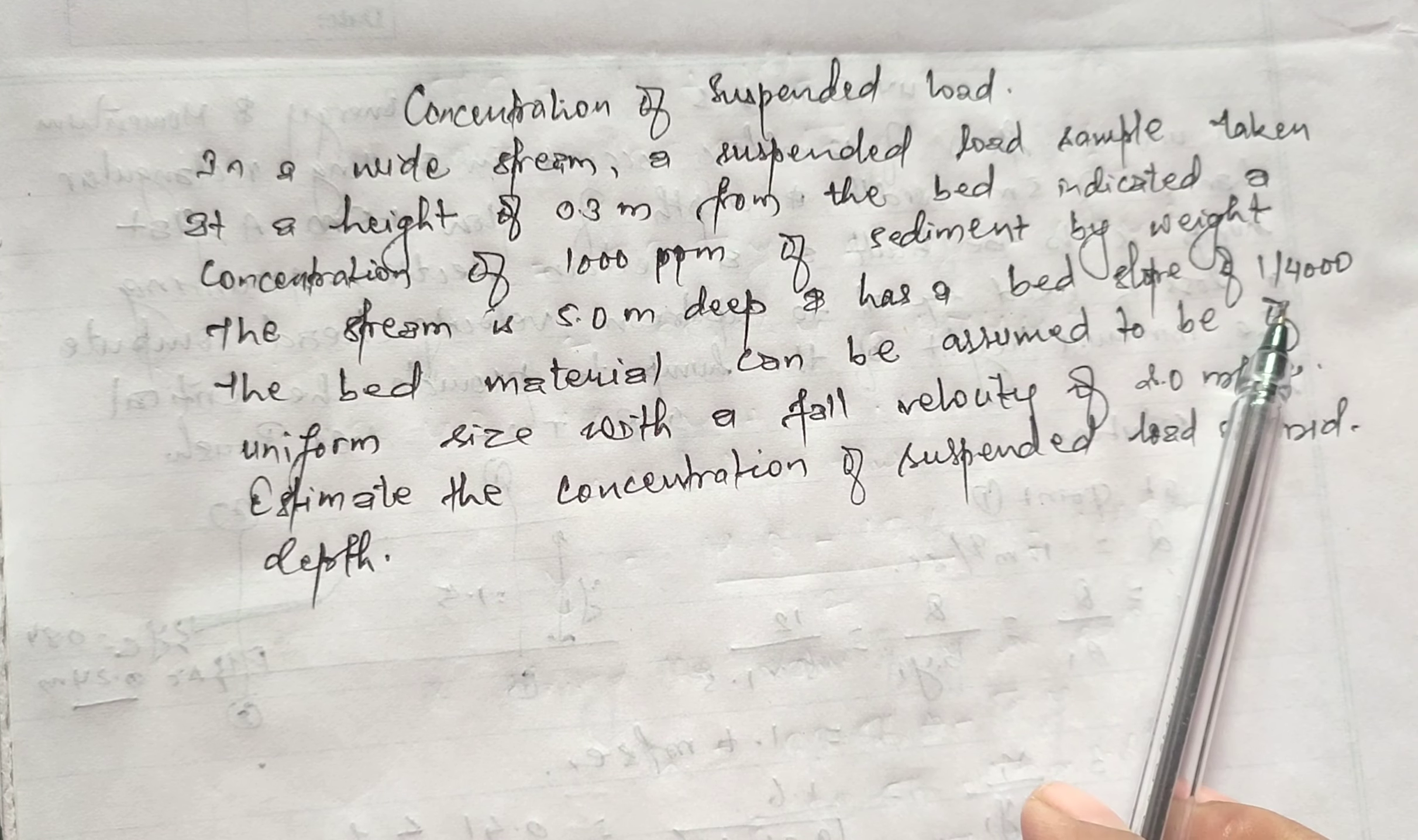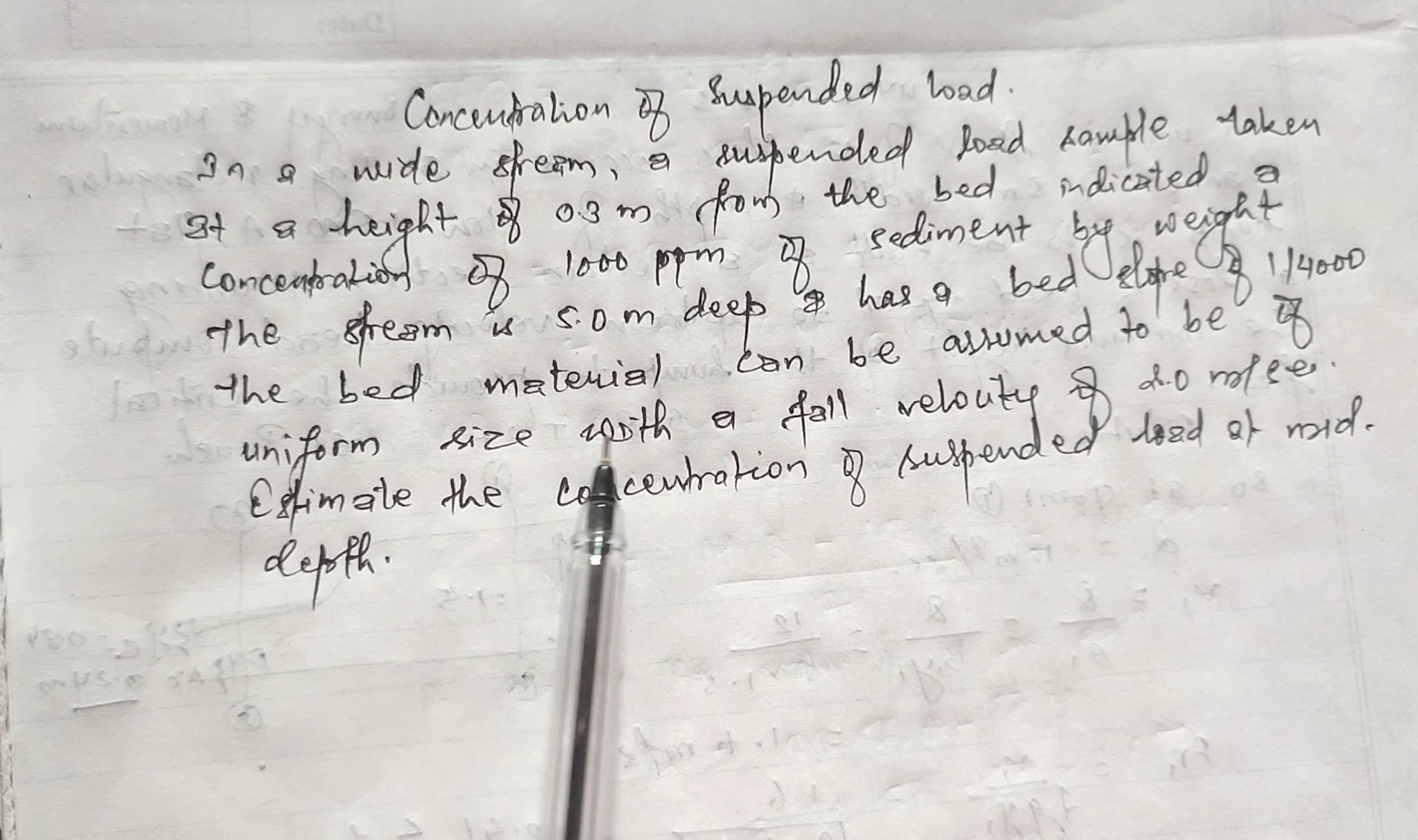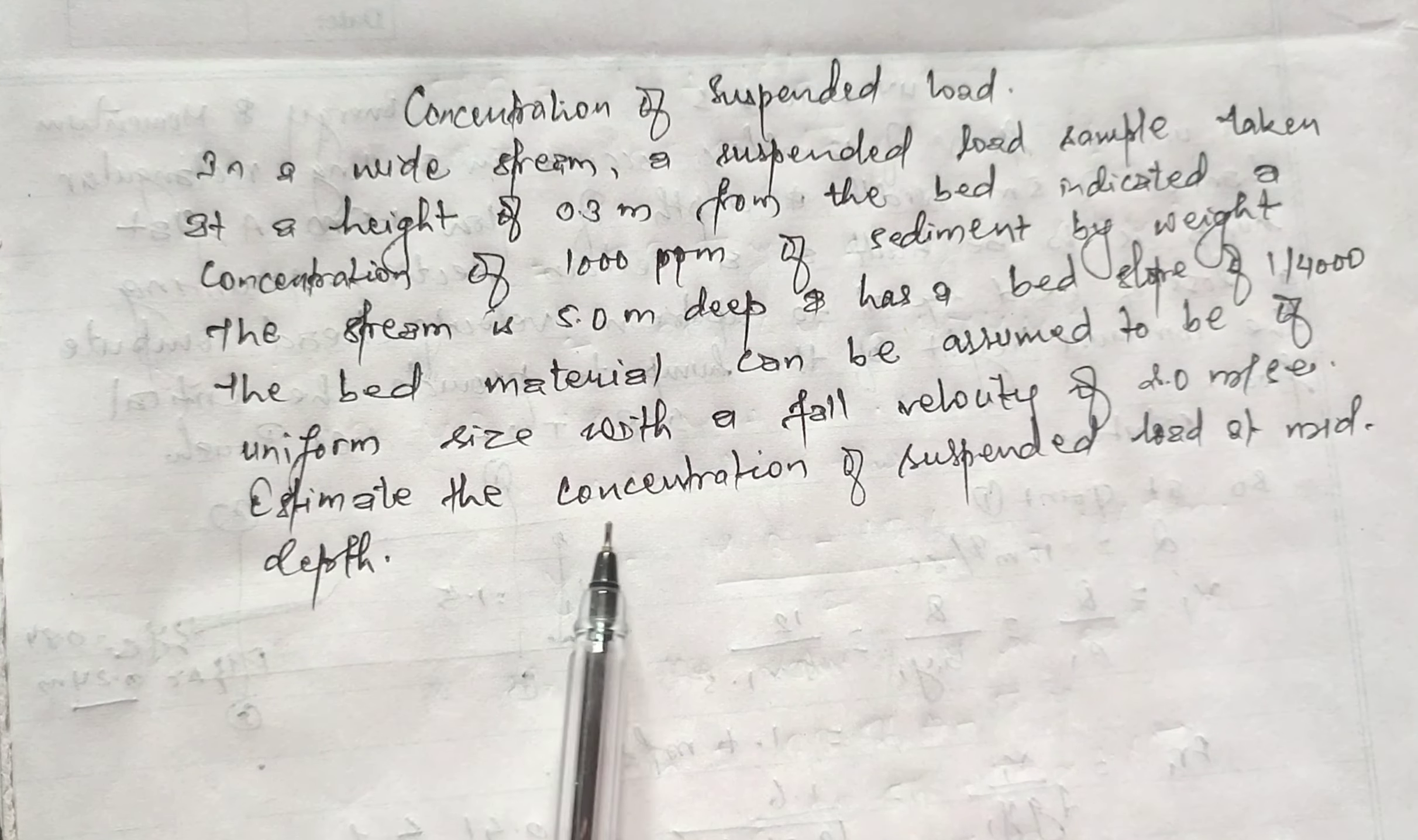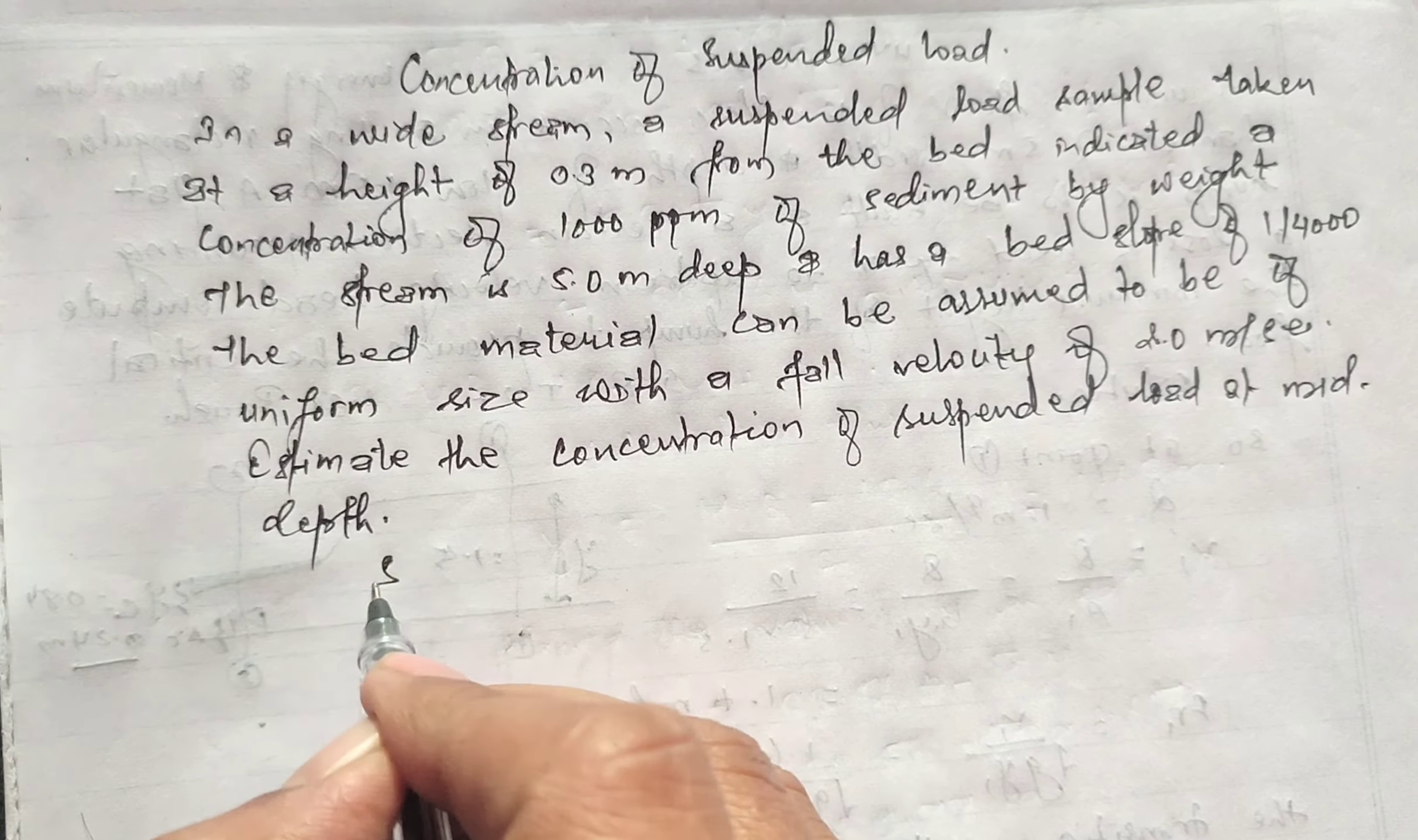bed slope of 1 in 1000. The bed material can be assumed to be of uniform size with a fall velocity of 2 meter per second. Estimate the concentration of suspended load at mid-depth. So let's start solving.